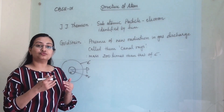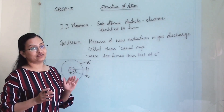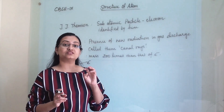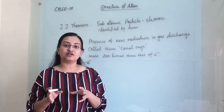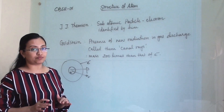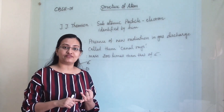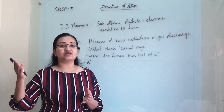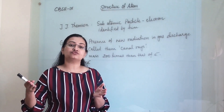We are going to go through all those details, study the proposed models given by scientists at that time, and simultaneously discuss their drawbacks, their assumptions, and why those models failed. Later we will also see how we decide the valency of an atom, how atoms tend to become stable, and how they form bonds and make compounds.